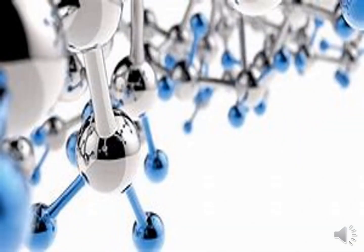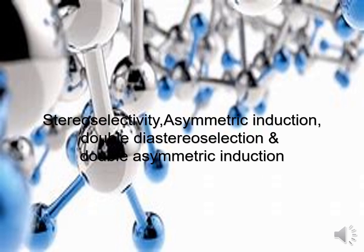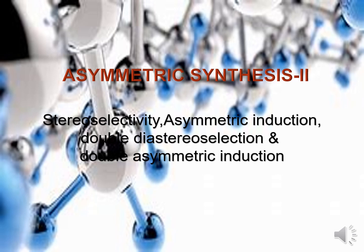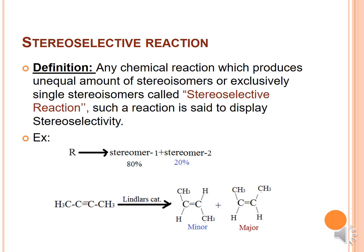The topic is asymmetric synthesis. In asymmetric synthesis, I will be dealing with stereoselectivity, asymmetric induction, double diastereoselection, and double asymmetric induction. In the previous session on asymmetric synthesis, I dealt with topics like enantiomeric excess — you can go through those methods of determination of enantiomeric excess and optical purity. So, moving on to stereoselective reactions.